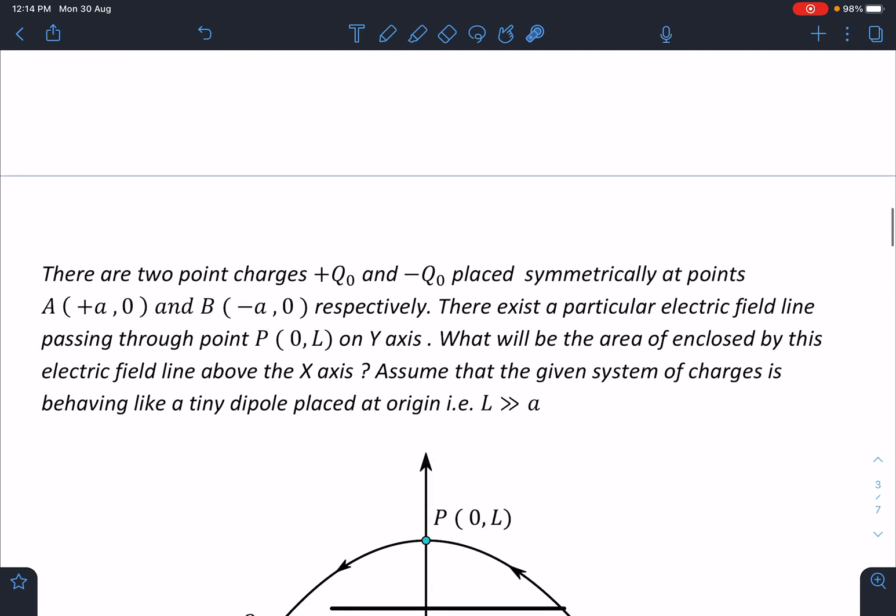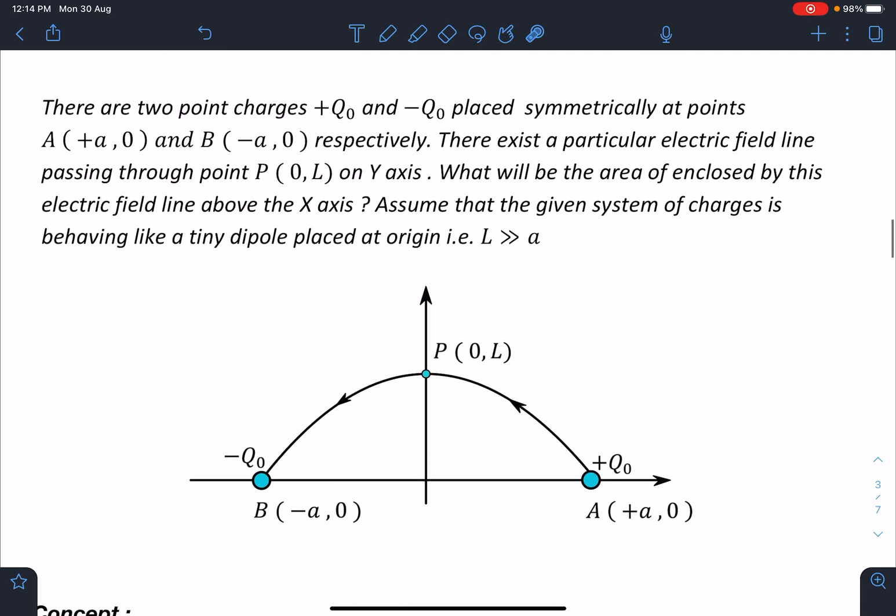Here is the problem statement: There are two point charges +q₀ and -q₀ placed symmetrically at points (+a, 0) and (-a, 0) respectively. There exists a particular field line passing through point (0, L) on y-axis. What will be the area enclosed by this electric field line above the x-axis? Assume that the given system of charges is behaving like a tiny dipole placed at origin, or we can say this L is very very large compared to a.